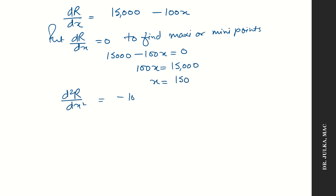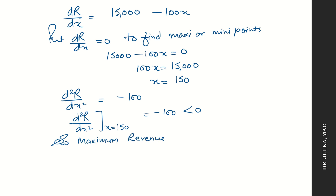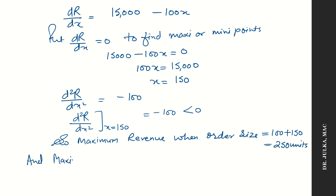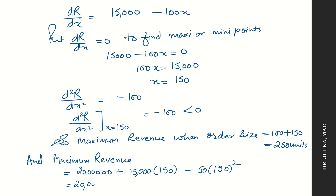Now in order to check maximum or minimum, we find the second derivative. The second derivative is minus 100. Putting x equal to 150 in the second derivative, we get minus 100, which is negative. So maximum revenue occurs at x equals to 150. The order size is 100 plus x, which is 100 plus 150 equals to 250. Putting x equal to 150 in the revenue function, revenue equals 20,000,000 plus 15,000 multiplied by 150 minus 50 multiplied by 150 squared, which equals 20,000,000 plus 22,500,000 minus 11,25,000. So the maximum revenue is Rs 31,25,000 when the order size is 250.